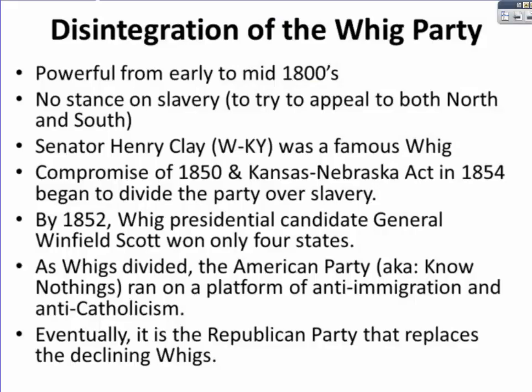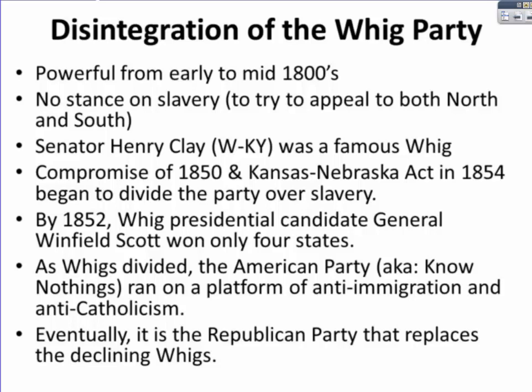The last major development leading to pro-slavery and anti-slavery conflict in Congress was the disintegration of the Whig Party. The Whig Party was very powerful from the early to mid-1800s, but they refused to take a stance on slavery in order to appeal to both the North and the South. Senator Henry Clay of Kentucky was a famous Whig. The Compromise of 1850 and the Kansas-Nebraska Act of 1854 began to divide the party, as some members became abolitionists and wanted the party to take a strong stance. But refusing to do so only made both sides angry — abolitionists wanted the Whigs to support abolition, and Southerners wanted them to openly support slavery.